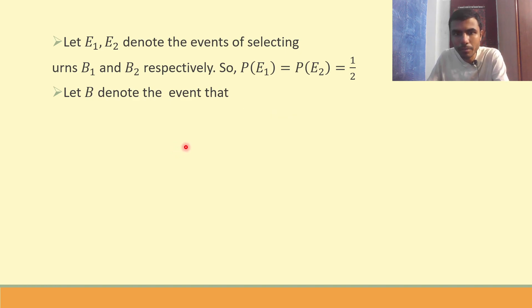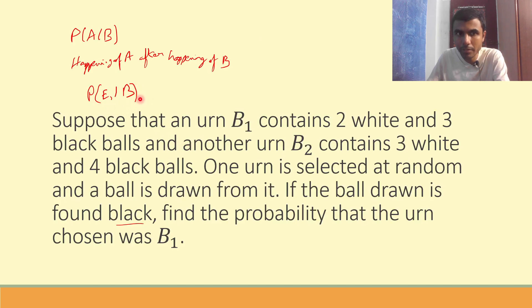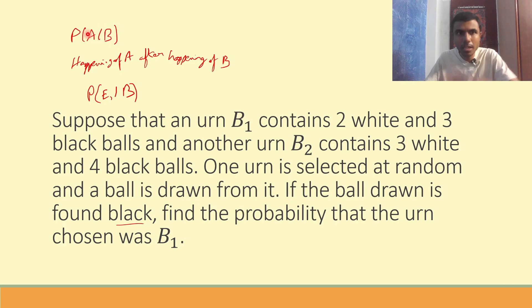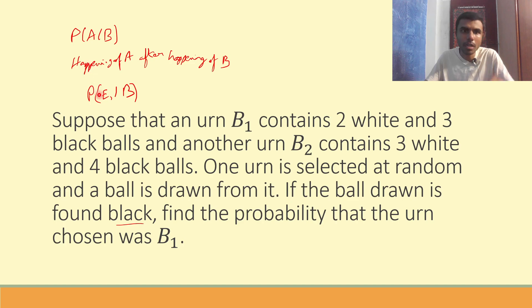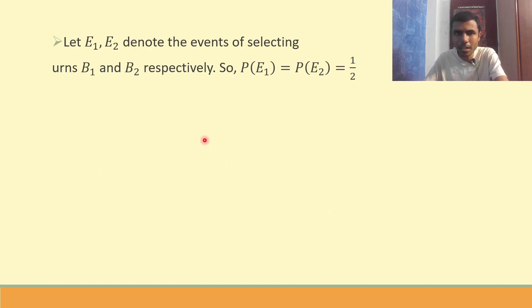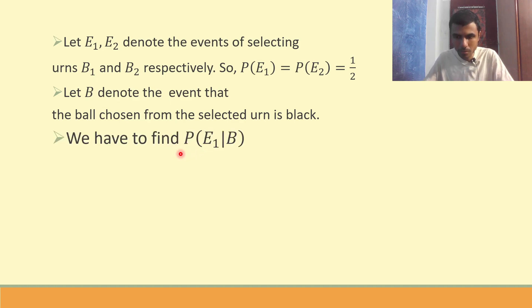Now we have to find P(E1|B). This is what we have to find out: P of E1 given B. The ball drawn is found black — that means we got a black ball, which has already occurred. Now they're asking us: given we got a black ball, what is the probability it was from bag 1, i.e., event E1? We'll be using Bayes' theorem to find this.